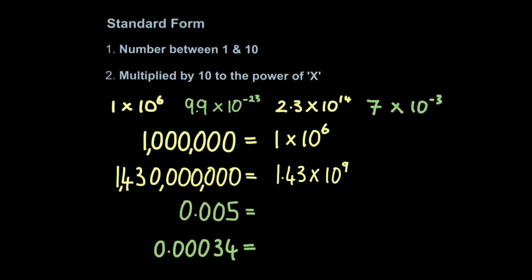Now, standard form can work the other way. We can have 0.005, and that'd be expressed as 5 times 10 to the minus 3. What that means is, imagine 5, imagine these weren't here, you just had 5. To create this figure, I've had to move the decimal point back 1, 2, 3 positions, minus 3.